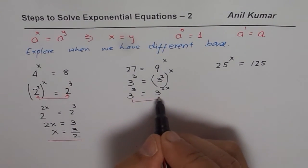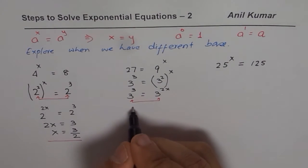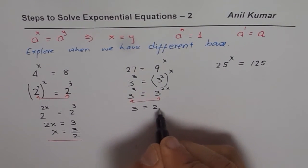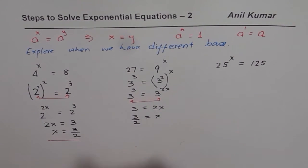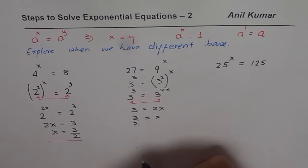We have the same base now. Since the bases are same, their exponent should also be equal. Therefore, 3 should be equal to 2x. You can now solve for x and x is equals to 3 over 2. So that is the solution. So that is the process to follow. We are getting the same answers.